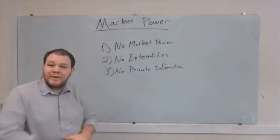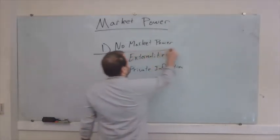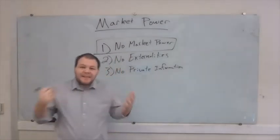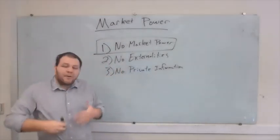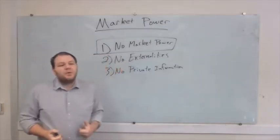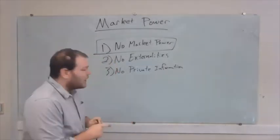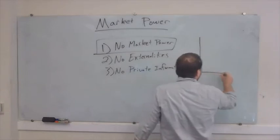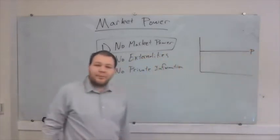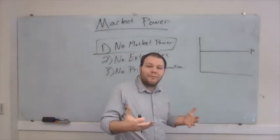What we're doing today is we're going to start thinking about market power. Effectively, what I mean by market power is a firm has market power when it has some ability to set its own price. When we've talked about competitive firms, we've essentially argued that if I'm a competitive firm, I can sell as much or as little output as I want at some market price.